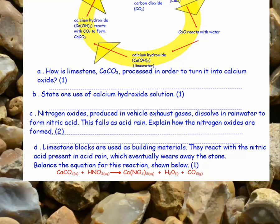Part D: limestone blocks are used as building materials. They react with the nitric acid present in acid rain, which eventually wears away the stone. Balance the equation for this reaction, shown below.